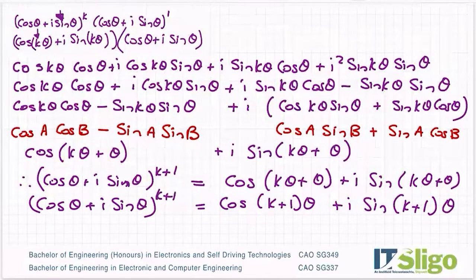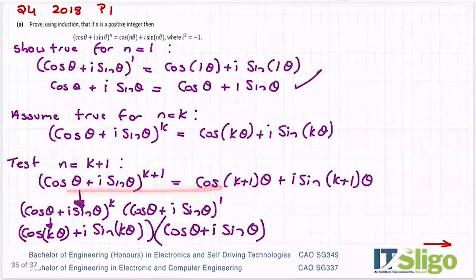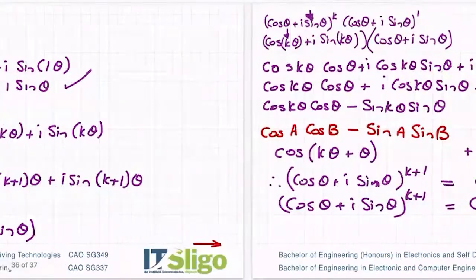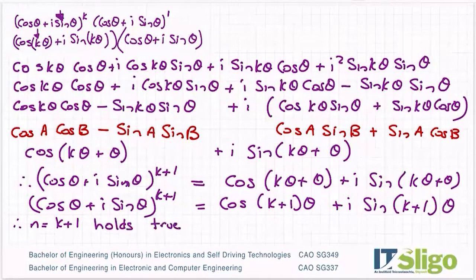So then you conclude. We've now proven that that's true. We have what we have here. So therefore. What you say is, therefore, N is equal to one, N is equal to K plus one holds true.